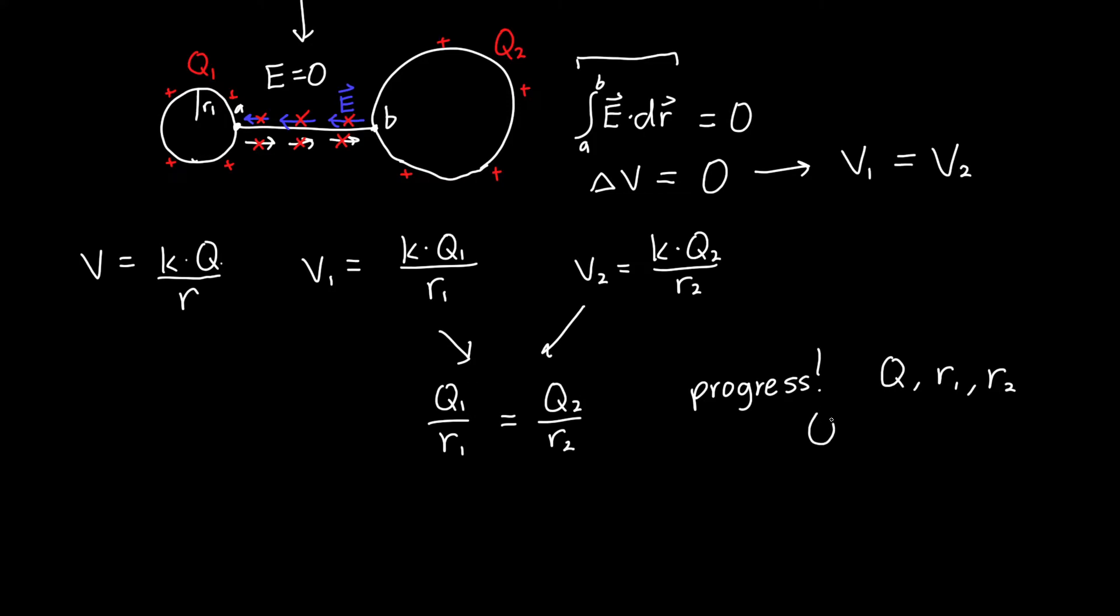We know that our initial charge has got to equal our total final charge. Some of the charge moved from the first sphere to the second sphere, but we didn't add or subtract any. That means our initial charge Q has to equal Q1 plus Q2.